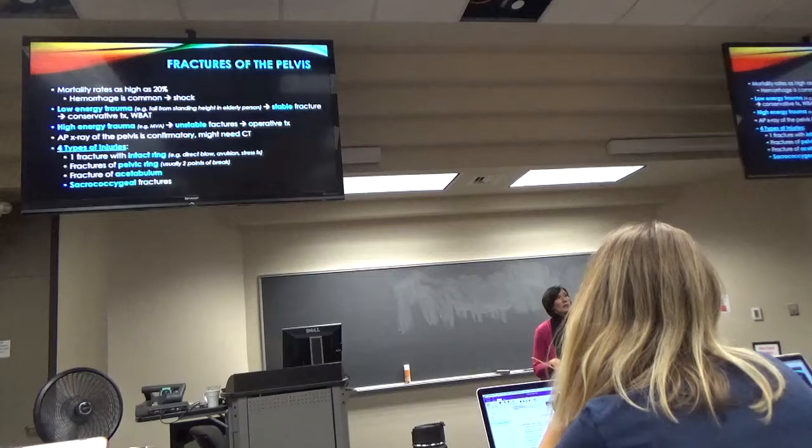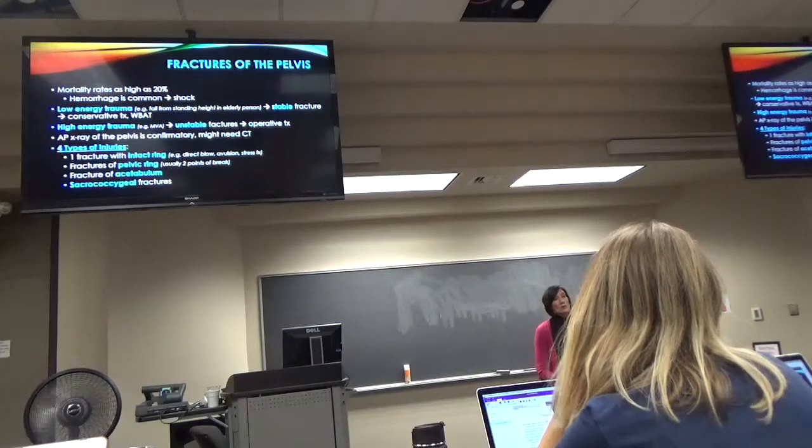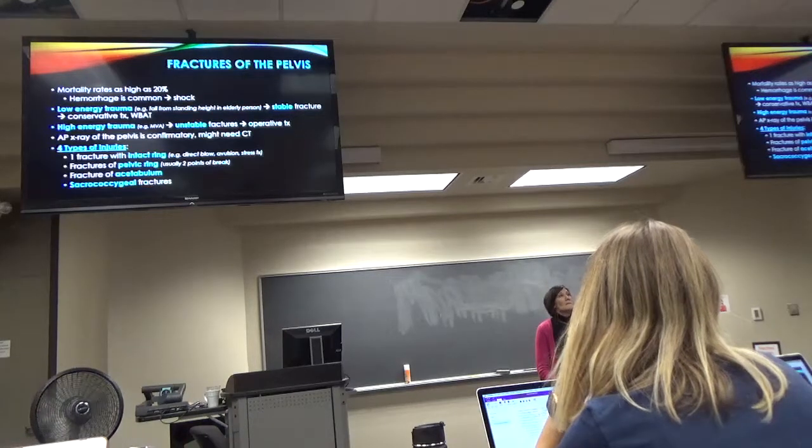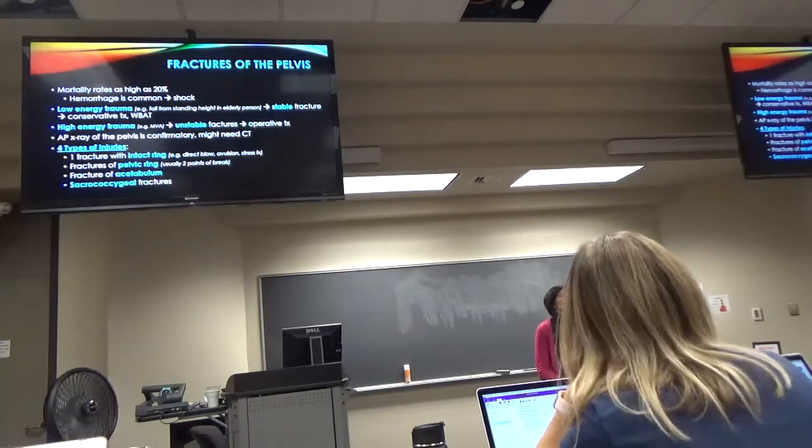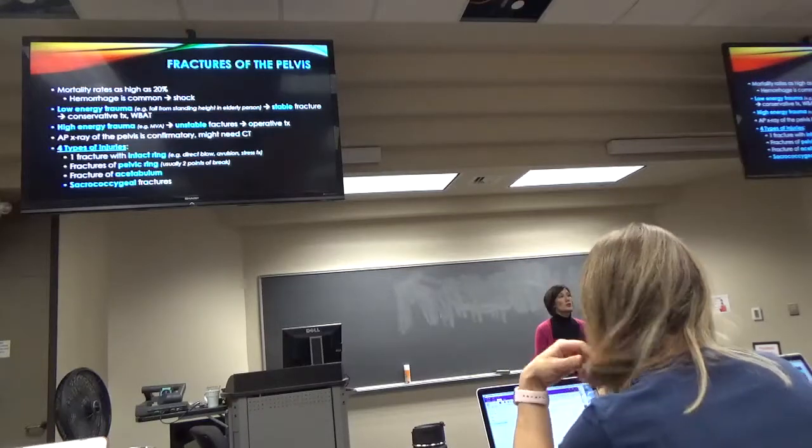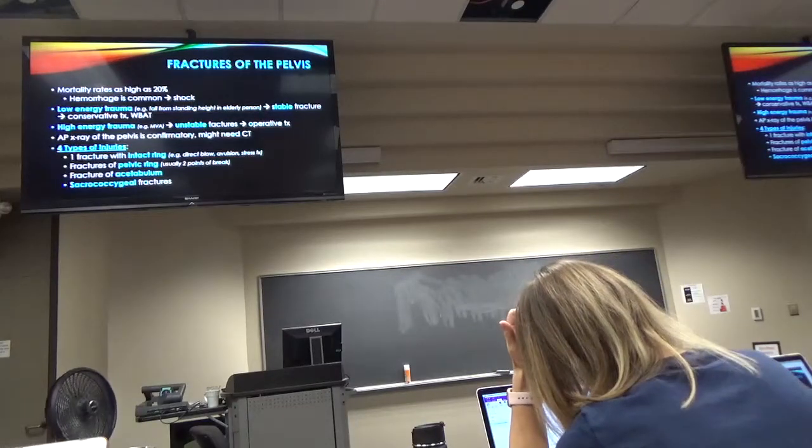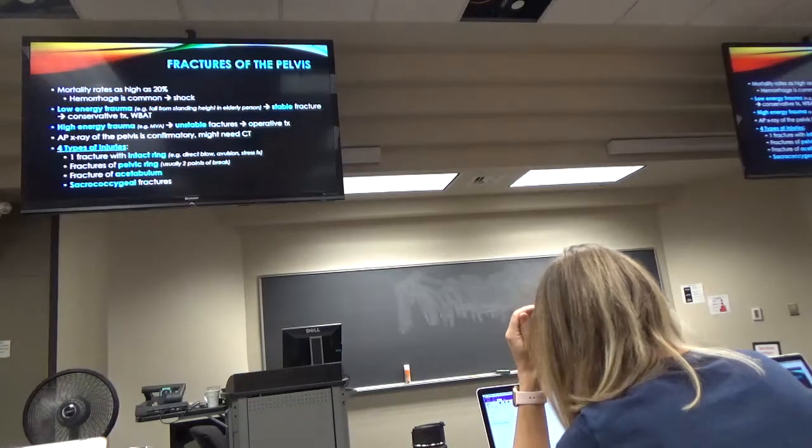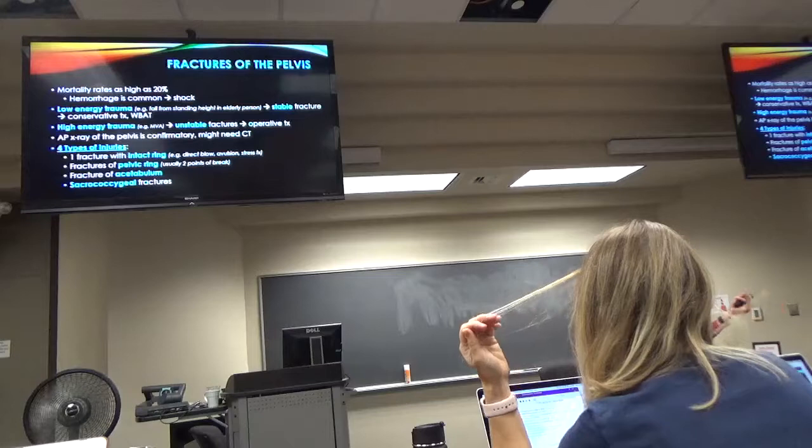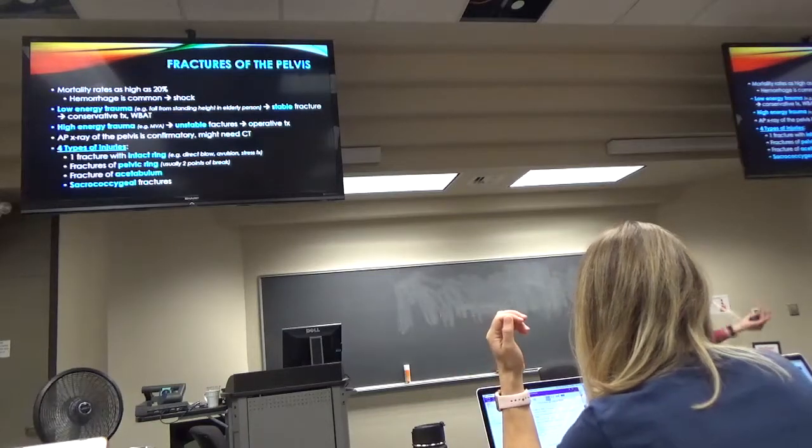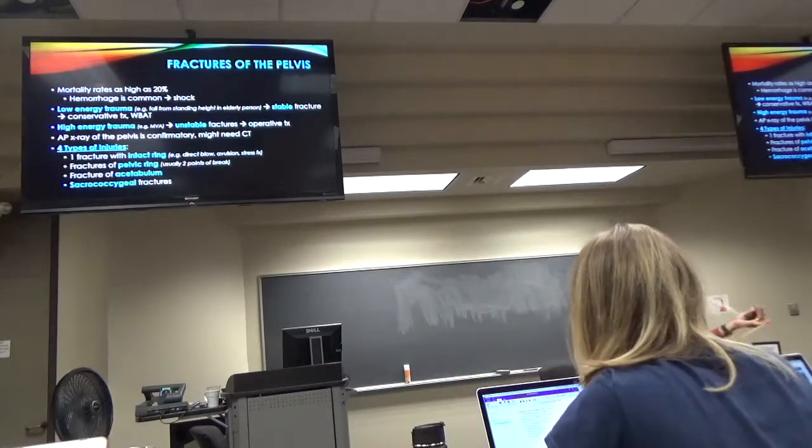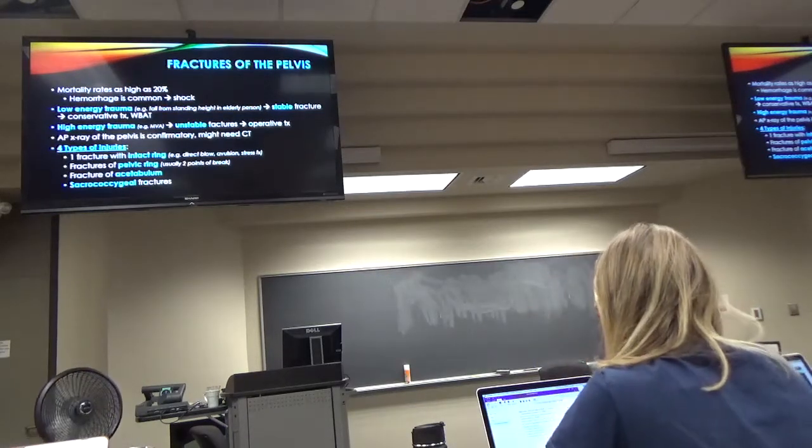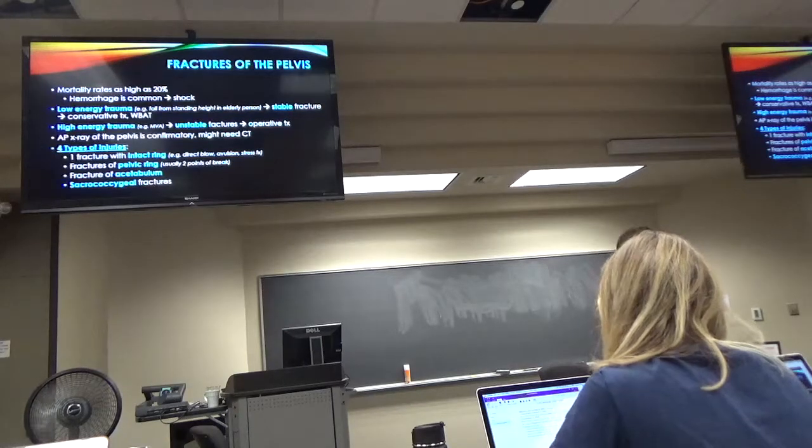So AP pelvis x-ray to confirm this we suspected. Maybe a CT scan. So think about pelvic fractures in four groups. And just take the bottom two out right off the top. They fracture just the acetabulum. Technically that's a pelvic fracture. But it's not a huge deal. And then the sacrococcygeal fractures. Those are not a huge deal. So you want to mostly think about fractures whether the person fractured the ring or not.